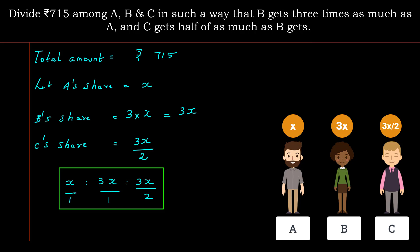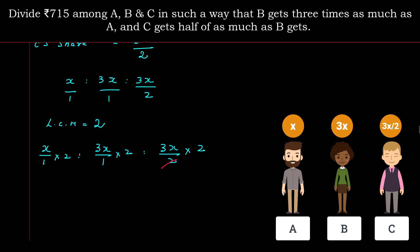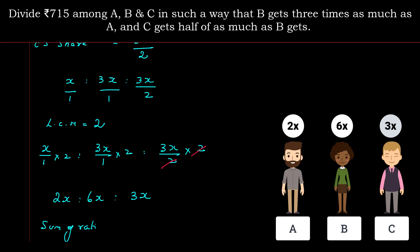This is a fractional ratio. Write X as X/1 and 3X as 3X/1 since any number divided by 1 is itself. The LCM of denominators 1 and 2 is 2. Multiplying each term: X/1 × 2 = 2X, 3X/1 × 2 = 6X, 3X/2 × 2 = 3X. So the simplified ratio is 2X : 6X : 3X. The sum of ratios is 2X + 6X + 3X = 11X.